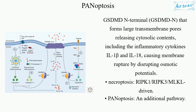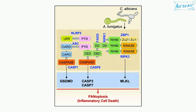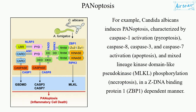Panoptosis — additional pathway. For example, Candida albicans induces panoptosis characterized by CASPASE-1 activation (pyroptosis), CASPASE-8, CASPASE-3, and CASPASE-7 activation (apoptosis), and mixed lineage kinase domain-like pseudokinase (MLKL) phosphorylation (necroptosis), in a Z-DNA-binding protein 1 (ZBP1)-dependent manner.